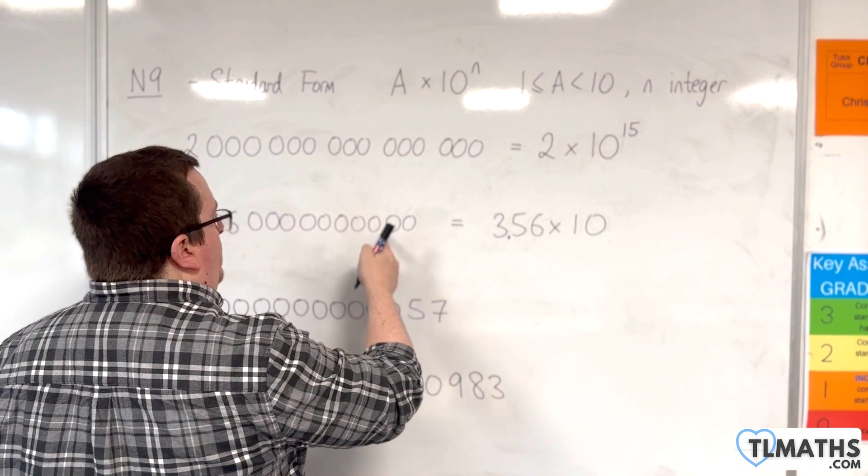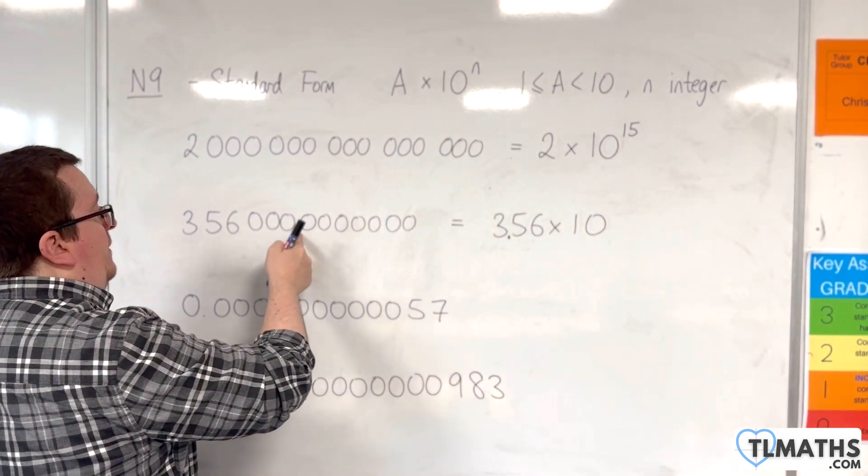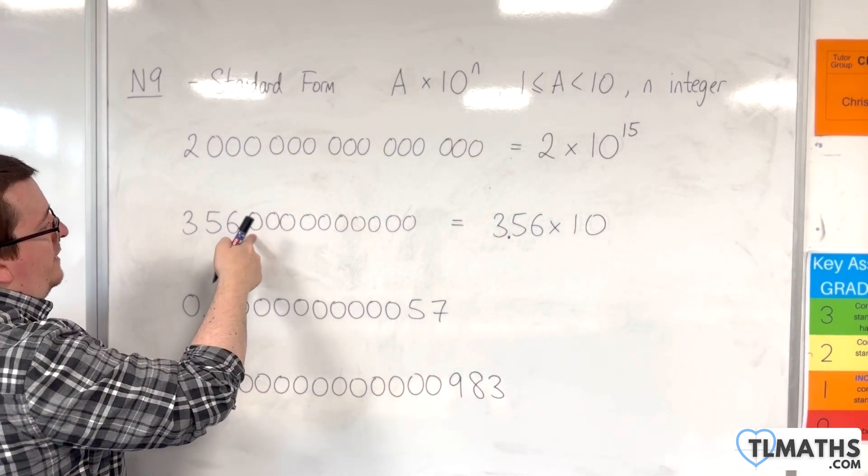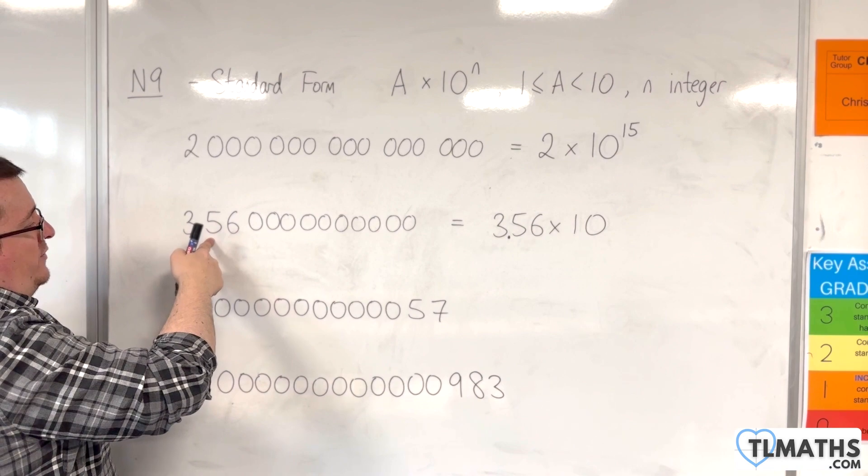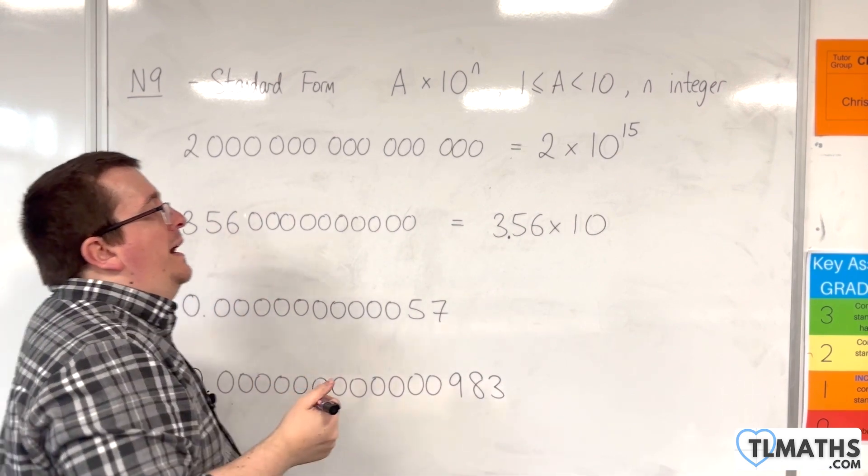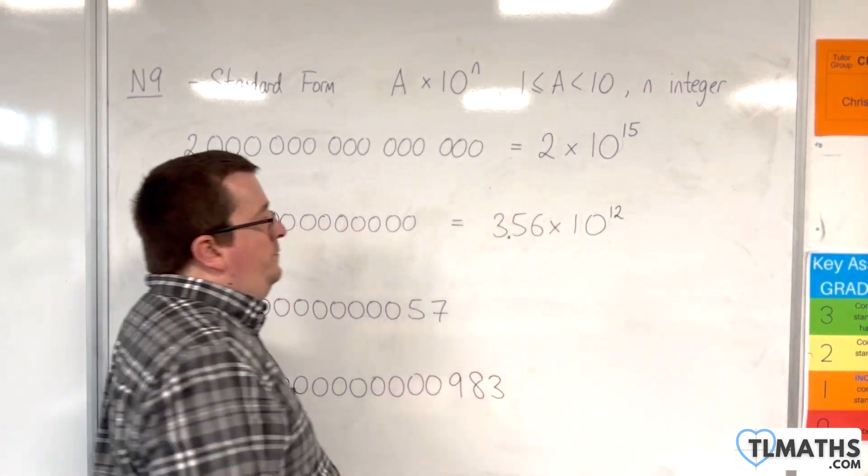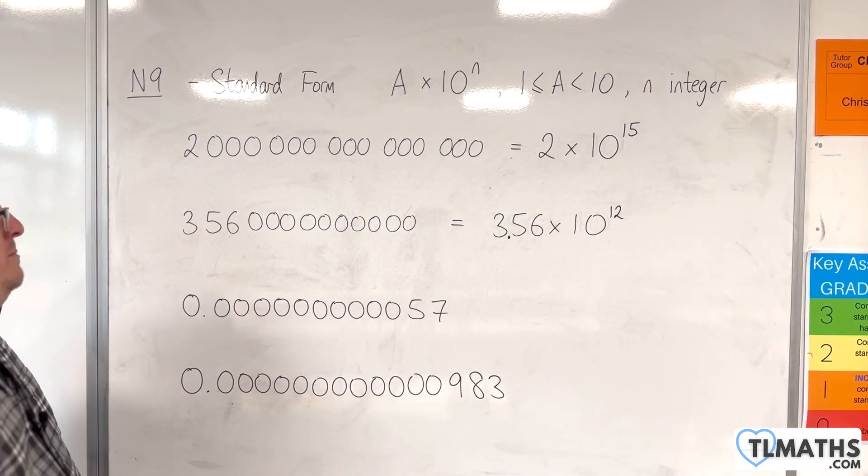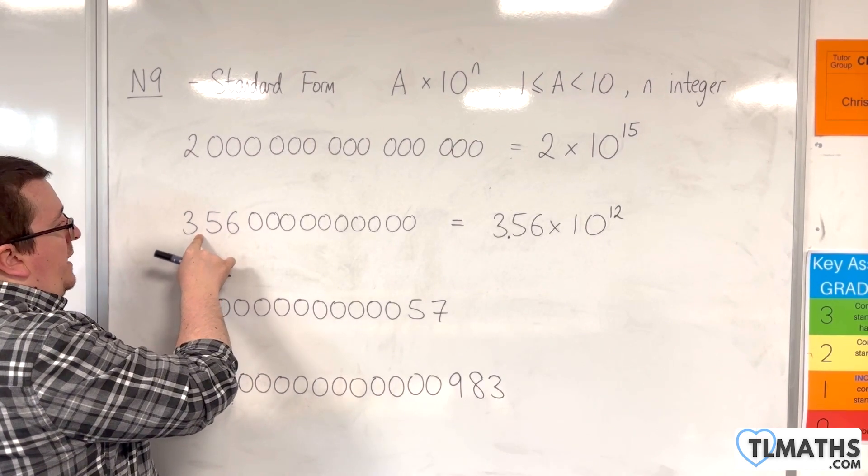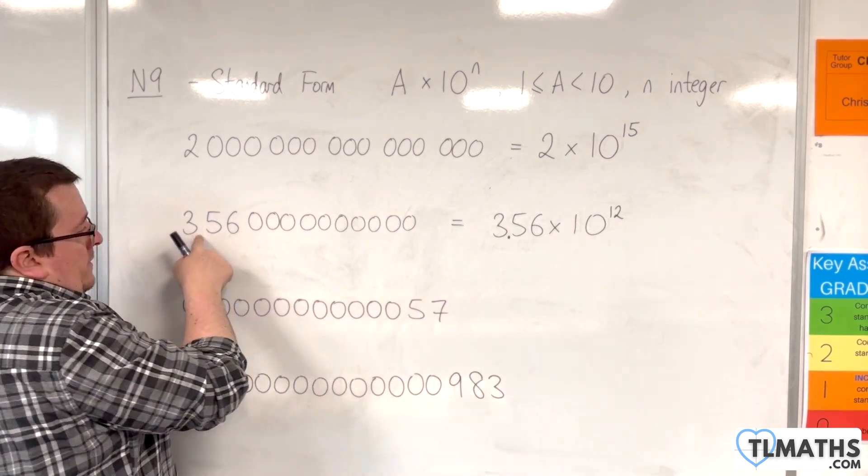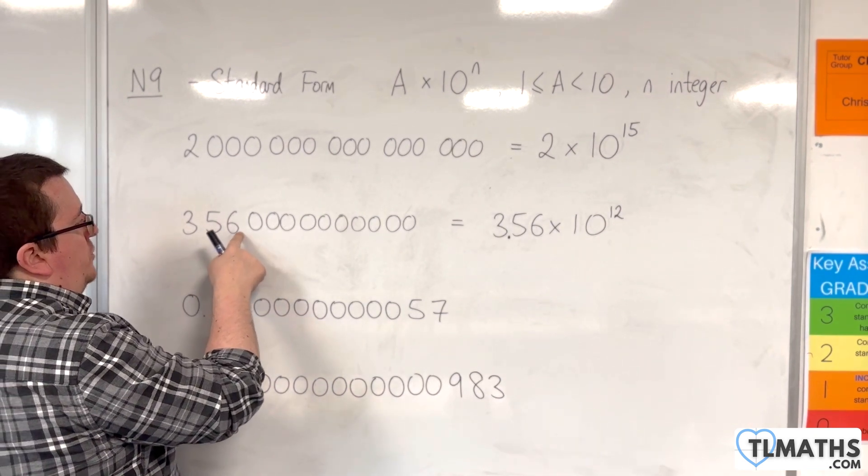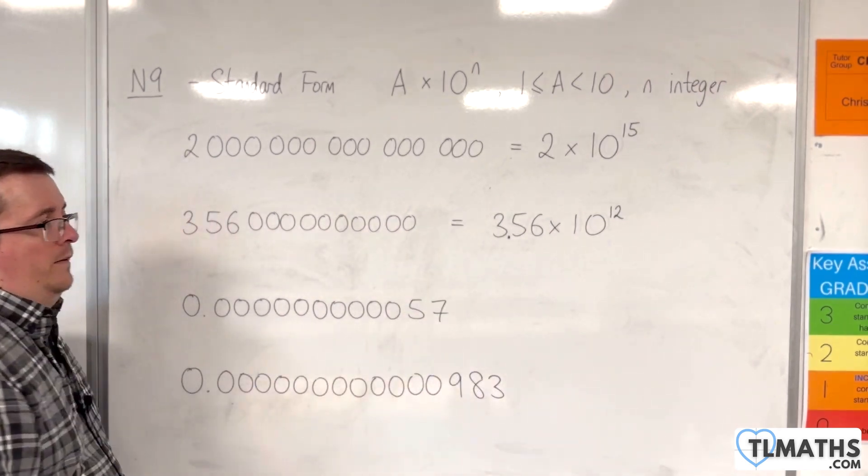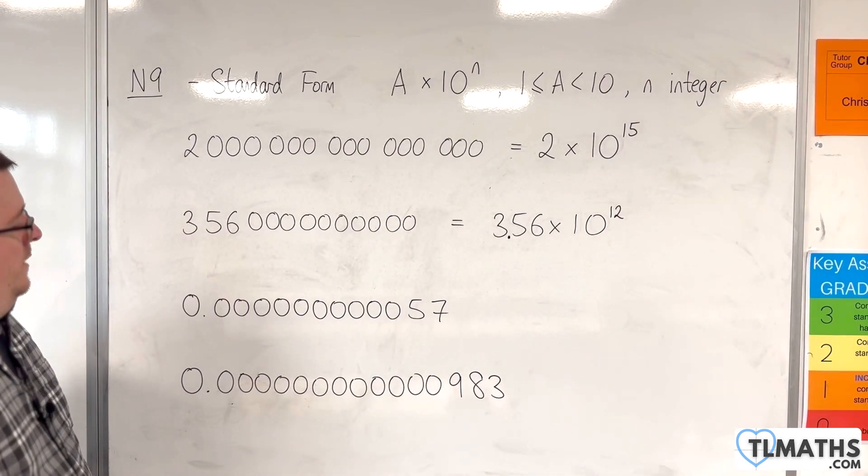Now what we do is count 1, 2, 3, 4, 5, 6, 7, 8, 9, 10 zeros. But it's the number of places I'm interested in: 11, 12, before I get to the 3. So that would be 12. Essentially, it's where the decimal point needs to move. If the decimal point needs to be here, 3.56, then it needs to go 1, 2, 3, 4, 5, 6, 7, 8, 9, 10, 11, 12.